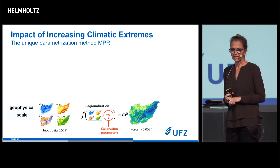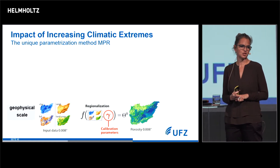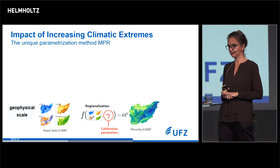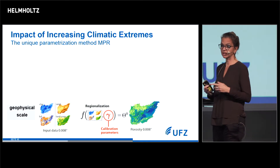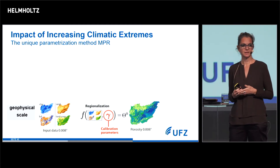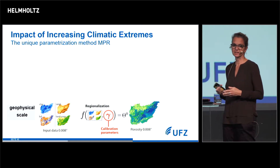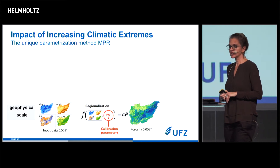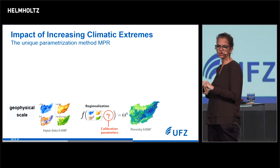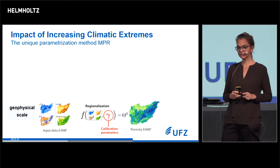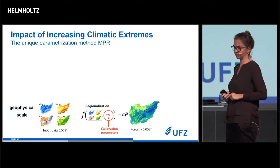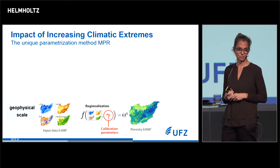The problem is that this information is not always what we really need in the models. What we need are parameters like porosity — a property that gives you the amount of water that fits into the soil. So we came up with the idea to link the information we have to the information we need using data science approaches.